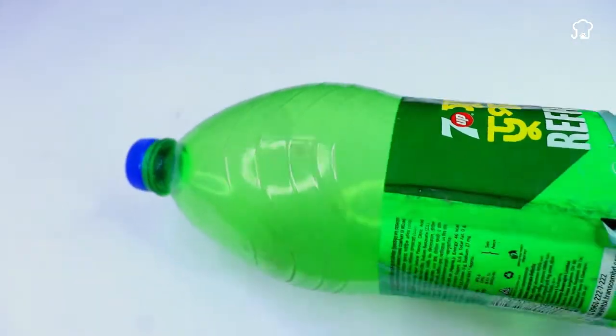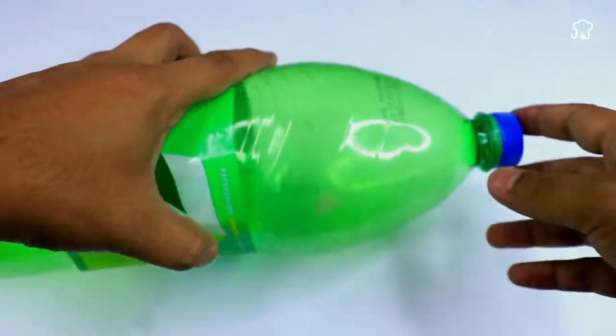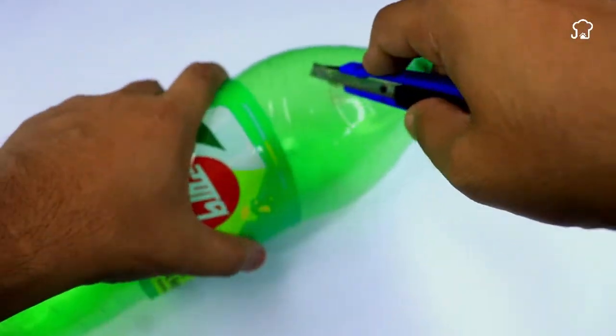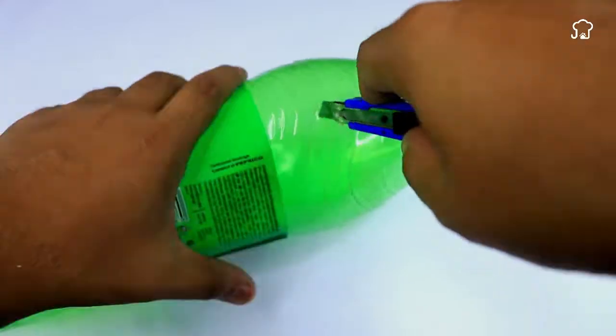First, take a plastic bottle and using a cutter, cut the top of it. Make sure to make a clean cut to facilitate the following steps.